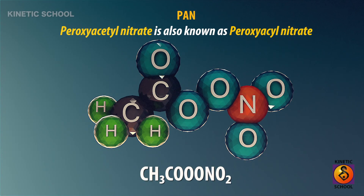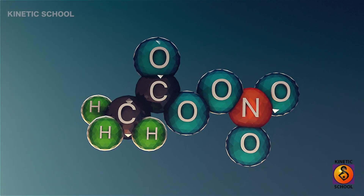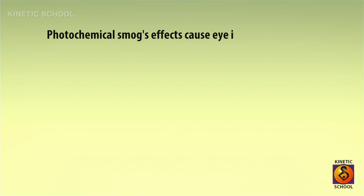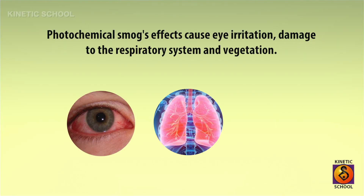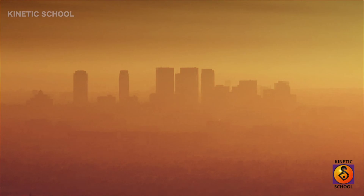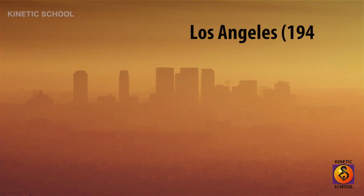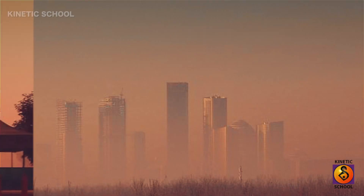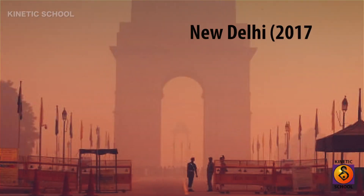Peroxyacyl nitrate is also known as PAN. Effects of photochemical smog include eye irritation, damage to the respiratory system, and damage to vegetation. Photochemical smog was first identified in Los Angeles in 1944. In 2017, photochemical smog enveloped large parts of Beijing, and in November 2017 air pollution spiked far beyond acceptable levels in Delhi.